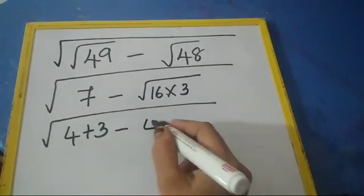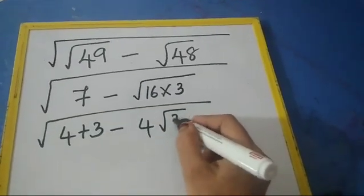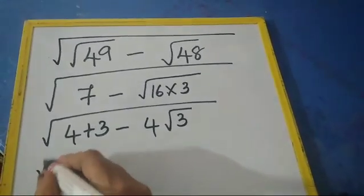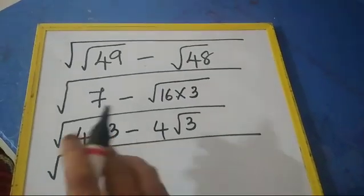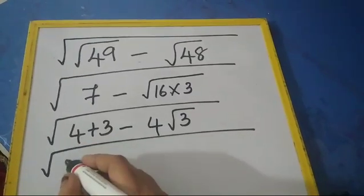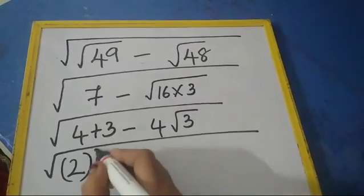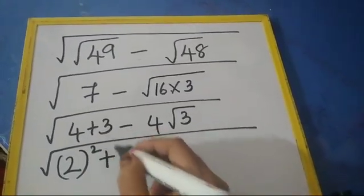4, then root 3. Now we will write this 4 as 2 squared, and this 3 we can write